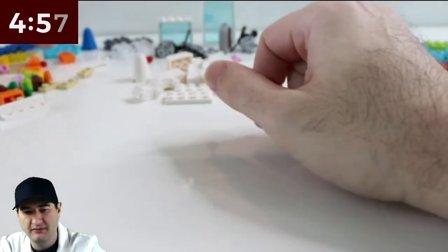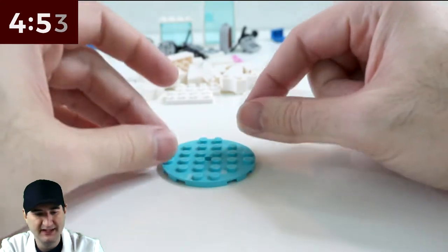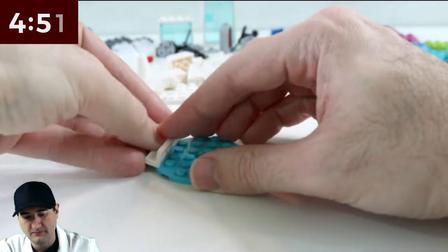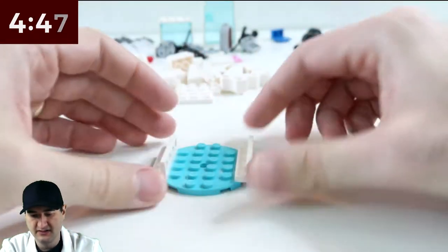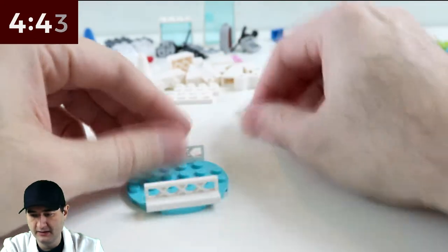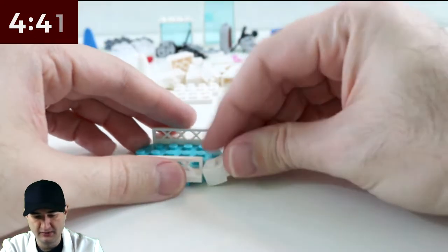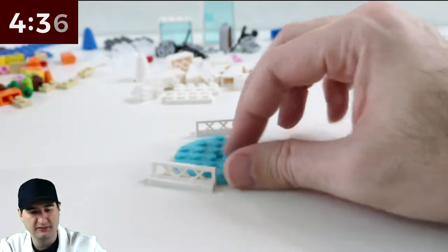So I was thinking something like this, with little nets on the end, like that. And then build up a rink around it. That's what I was thinking. So let's see what we can do.